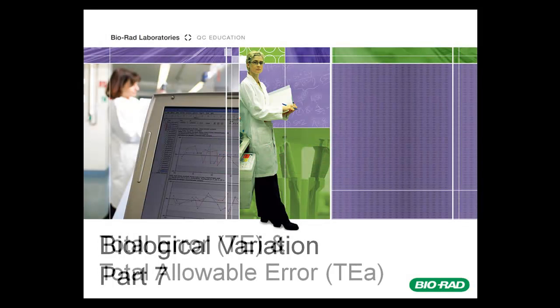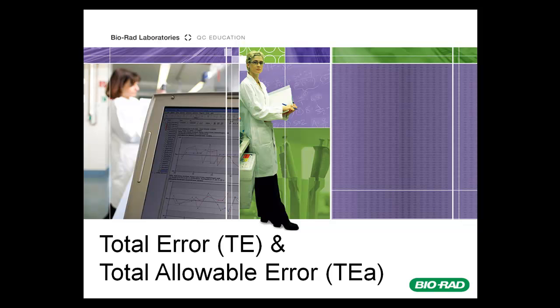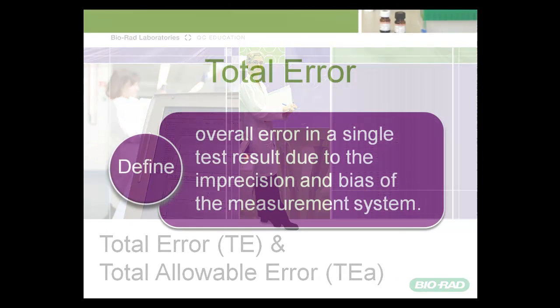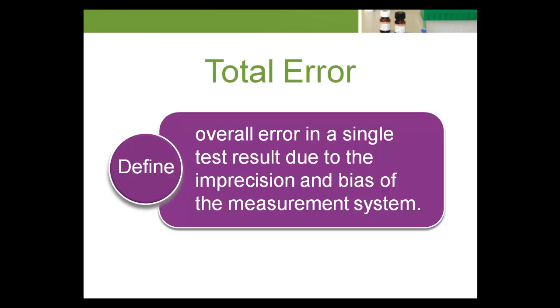In this section, we'll learn about Total Allowable Error and how it can be calculated for a test. Total Error is the overall error in a single test result due to the imprecision and bias of the measurement system.